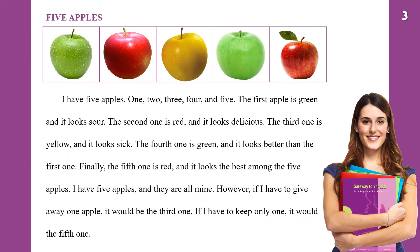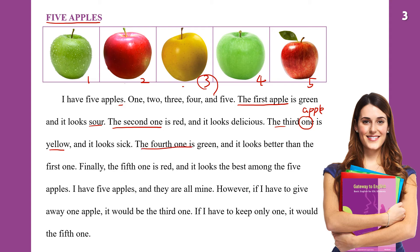Let us read the story. The title is Five Apples. I have five apples: one, two, three, four, and five. The first apple is green and it looks sour. The second apple is red and it looks delicious. The third one is yellow — so 'one' means apple — the third apple is yellow and it looks sick. The fourth one is green and it looks better than the first one.